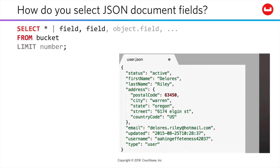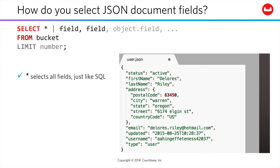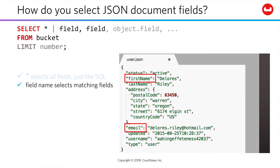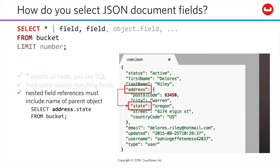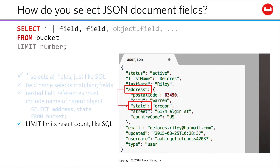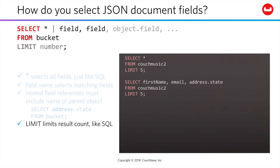N1QL syntax aims to be as close to ANSI SQL as possible, while still respecting the distinction of querying JSON documents rather than tables. Selecting a field name shared by a common set of documents is analogous to selecting a column from a table. Just as with SQL, SELECT * selects all fields in the target bucket, which would be a very broad query without some filtering. More likely, you'll select specific field names, using nested references to access multidimensional objects within your documents. You can limit your total results, just as with SQL.